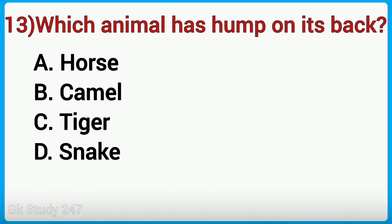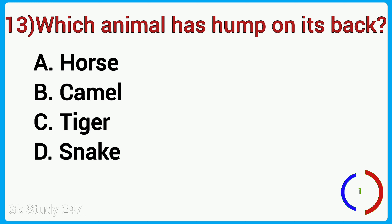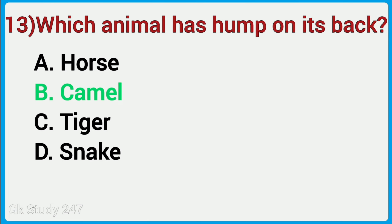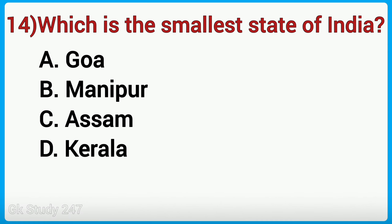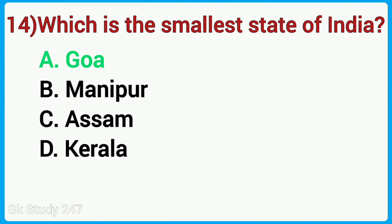Which animal has a hump on its back? Answer is Camel. Which is the smallest state of India? Answer is Goa.